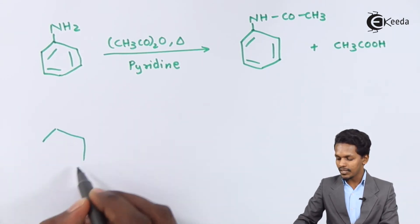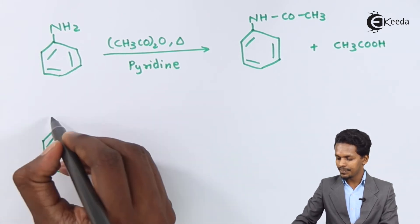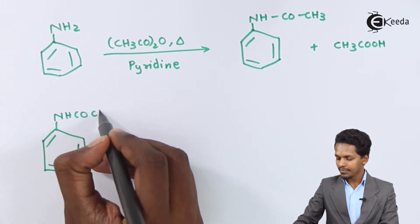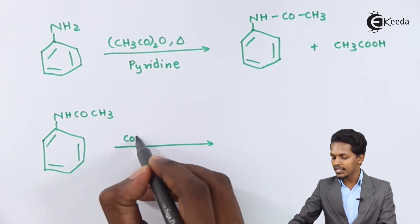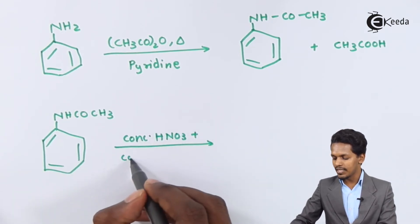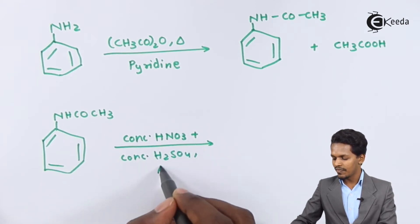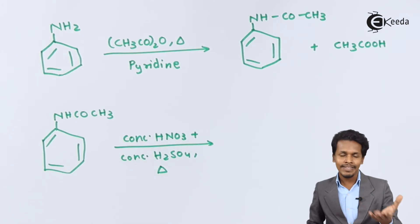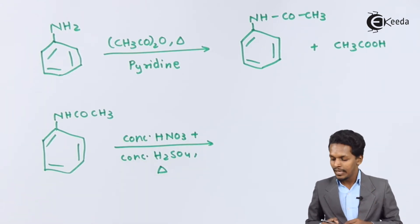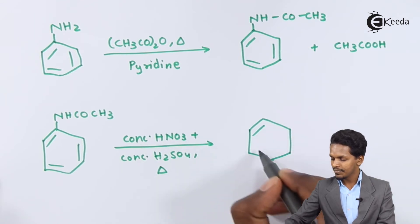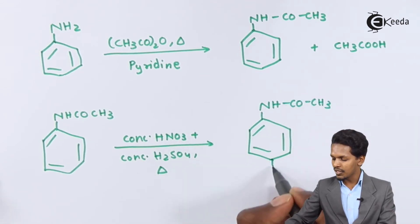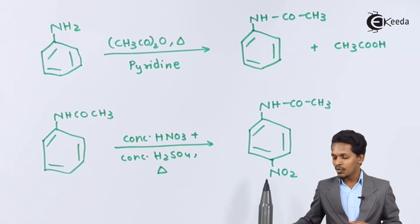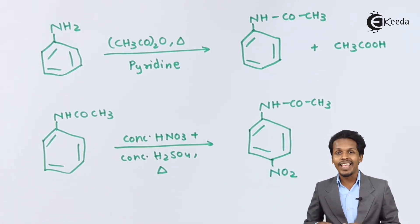Taking the acetanilide product we just obtained, we now carry out the nitration process in the presence of concentrated HNO3 along with concentrated H2SO4 at 288 Kelvin. In this case, only one product is obtained: the acetamido group remains as it is, while the NO2 group is introduced at the para position. This product is called para-nitroacetanilide.